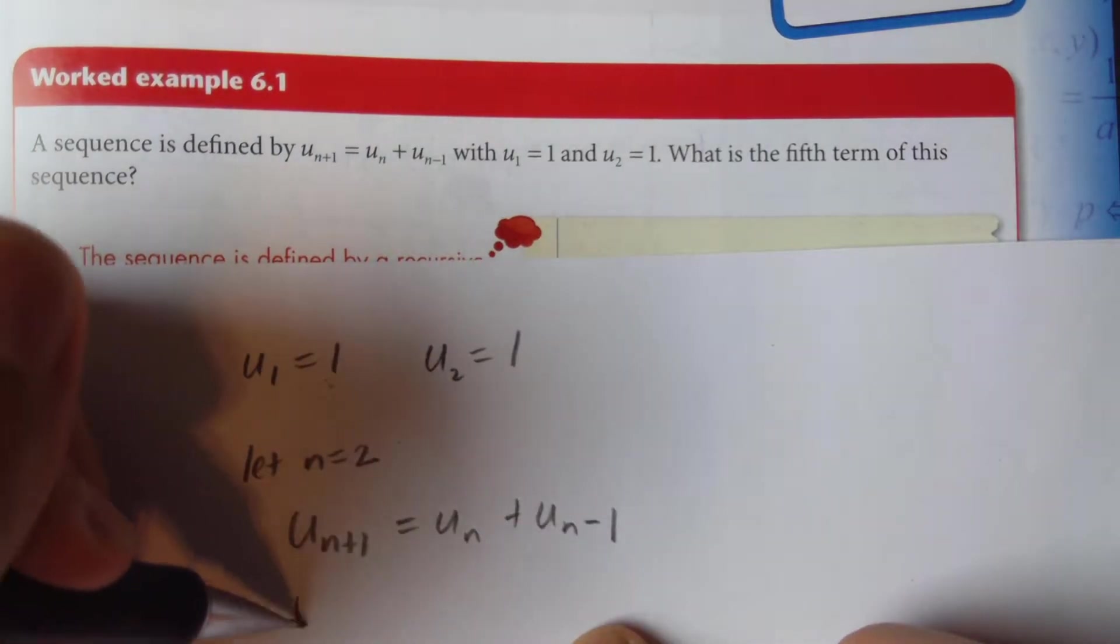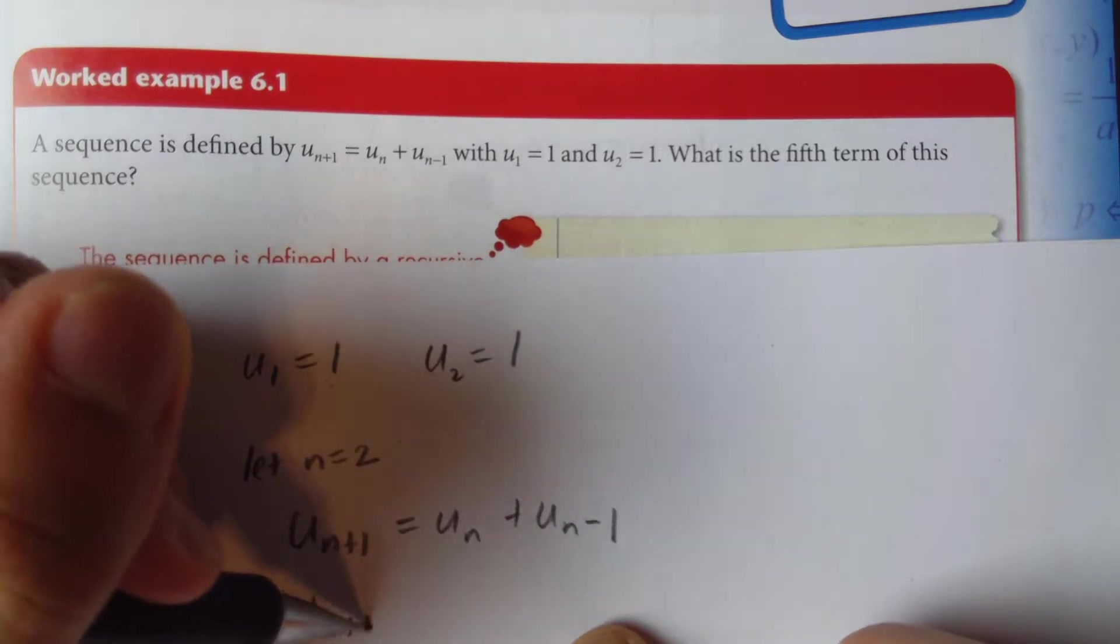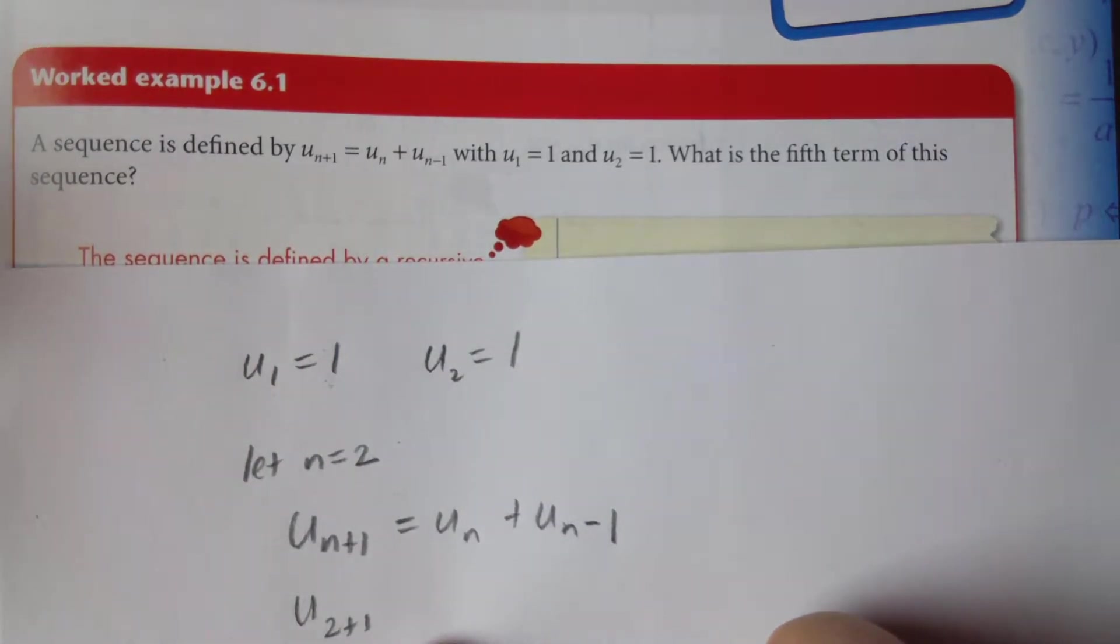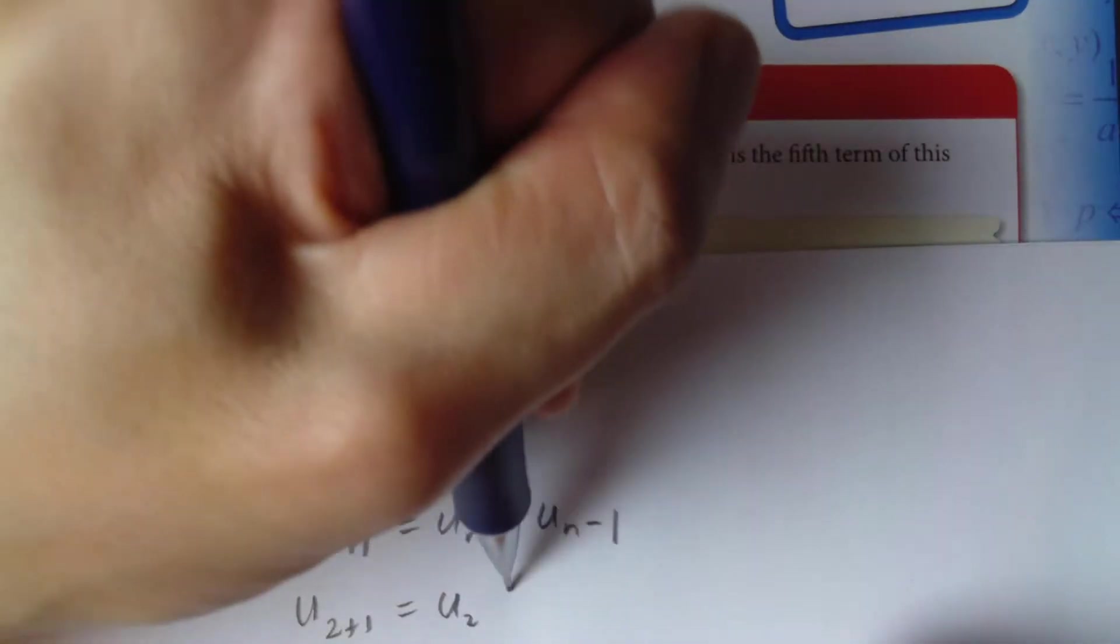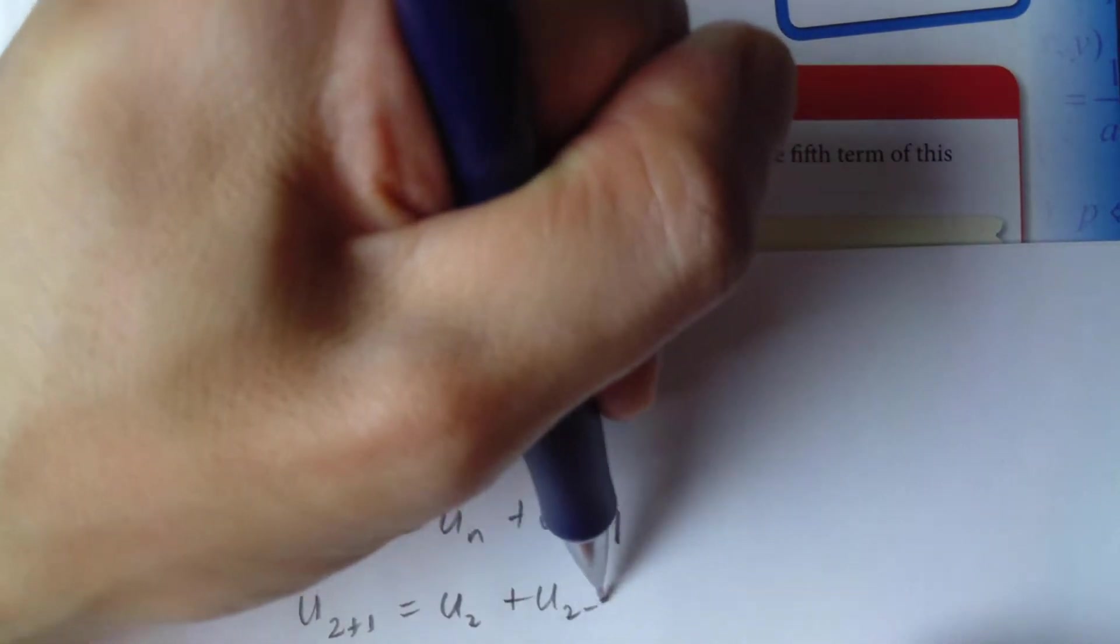Because the formula u_{n+1} equals u_n plus u_{n-1}, when n is 2 becomes u2 plus 1, and 2 plus 1 is 3. So essentially we're finding u3. This is going to be u2 plus u2 minus 1.